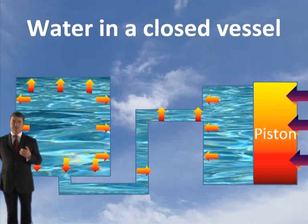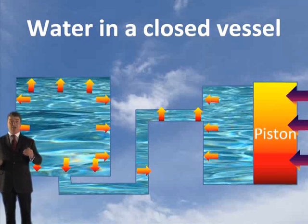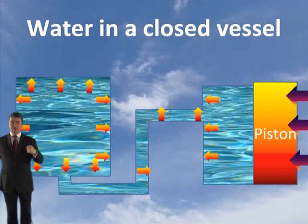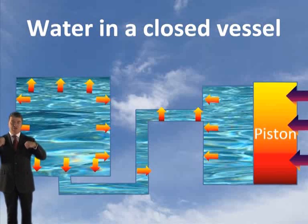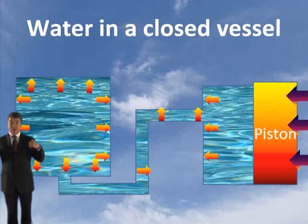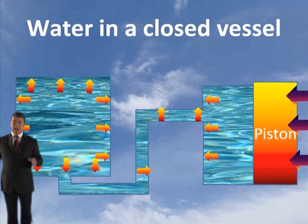What about water in a closed vessel? If water is in a closed vessel, it can't go anywhere. If pressure is applied to a confined liquid, then the pressure is transmitted to all parts equally. It doesn't matter how far away from the force — near or far — if it's a closed vessel and you put pressure on it, that pressure will be exerted equally at all points throughout the system. As you can see, all that pressure is exactly the same.